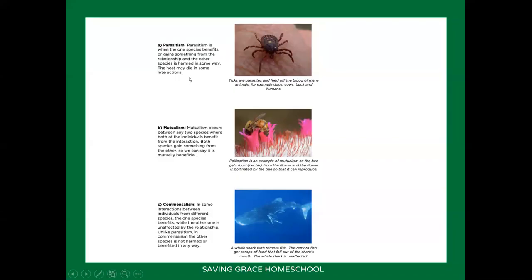The first type of symbiosis is parasitism. This is when one species benefits while the other species is harmed in some way — sometimes the host will die. An example is ticks: they are parasites and they feed off the blood of many animals such as dogs, cows, buck, and humans. So this is a harmful relationship where only one of them benefits.